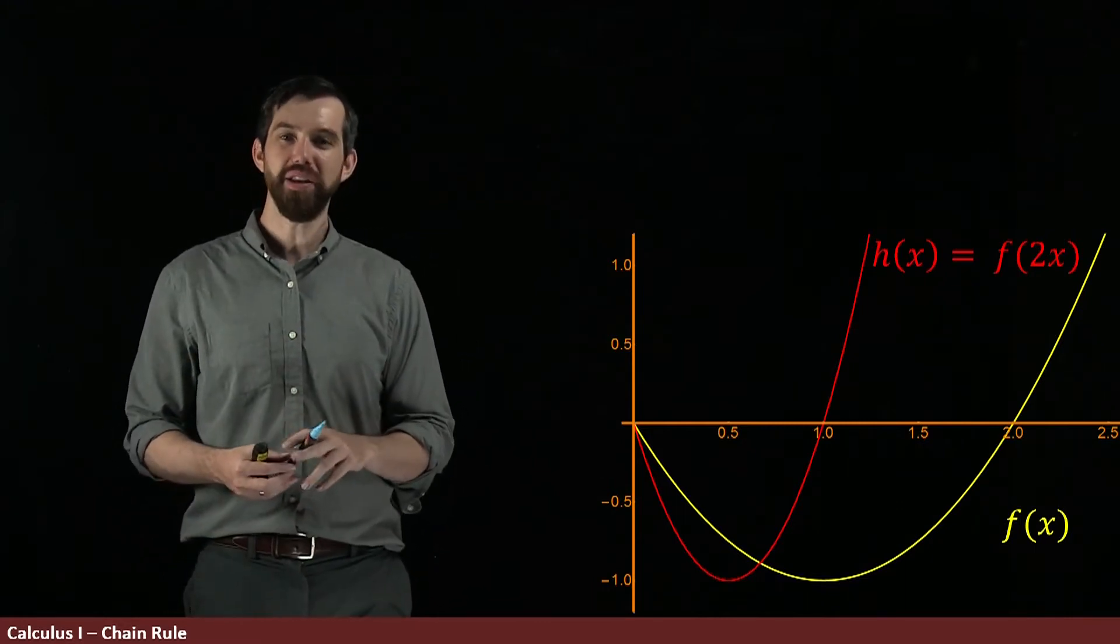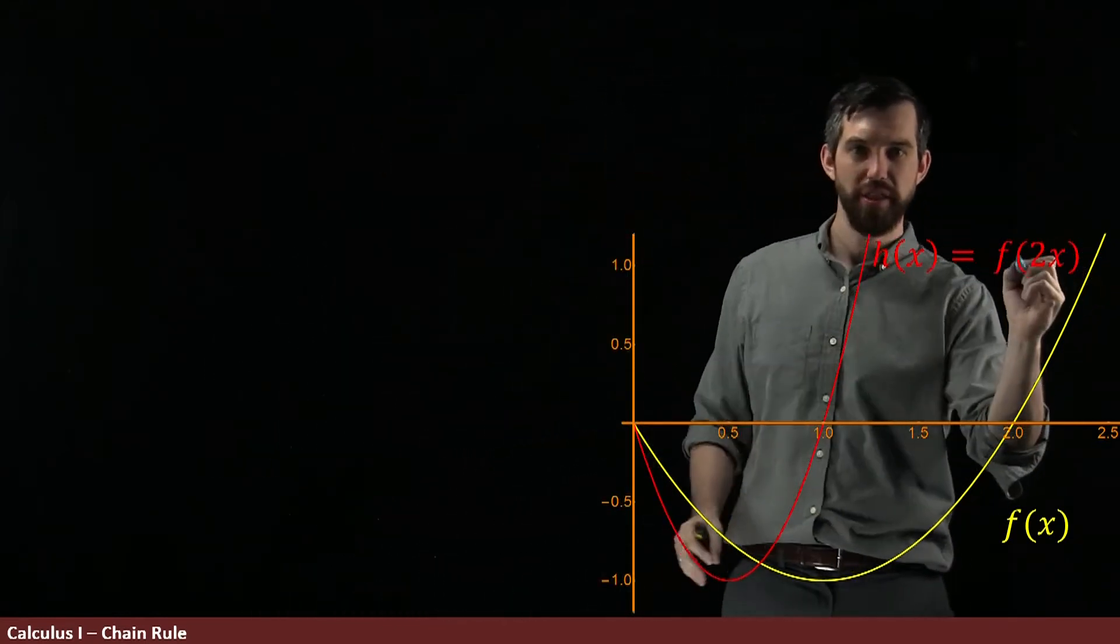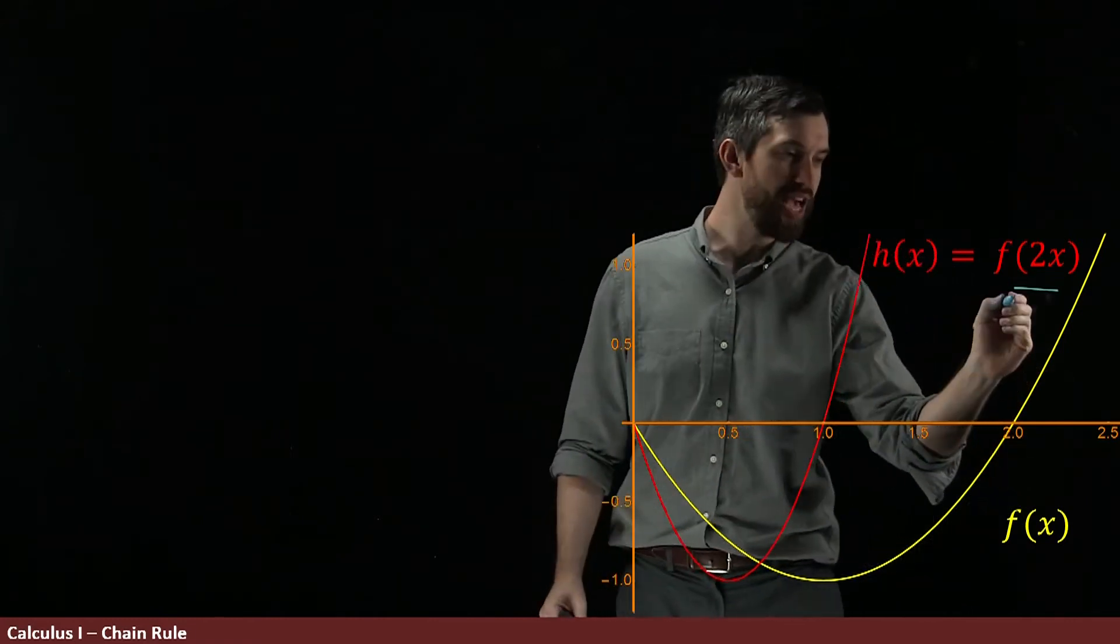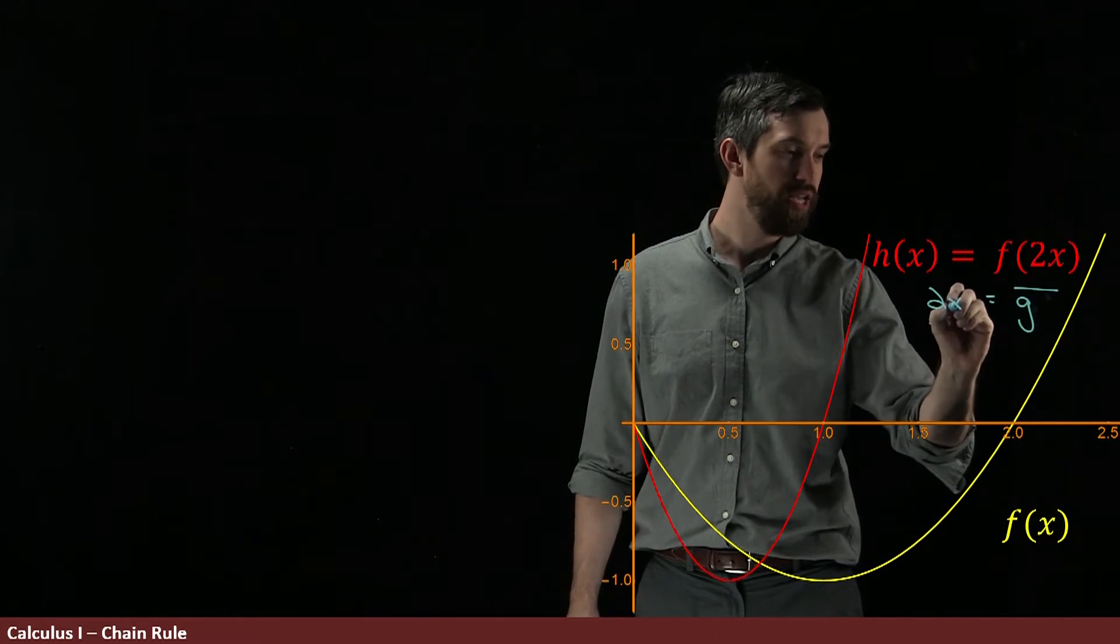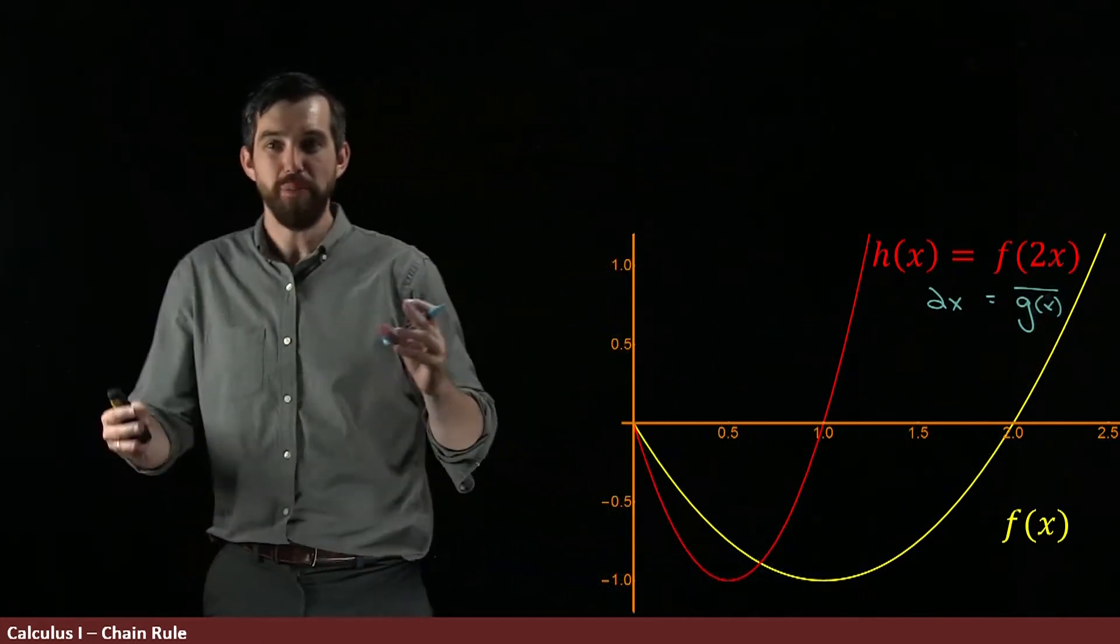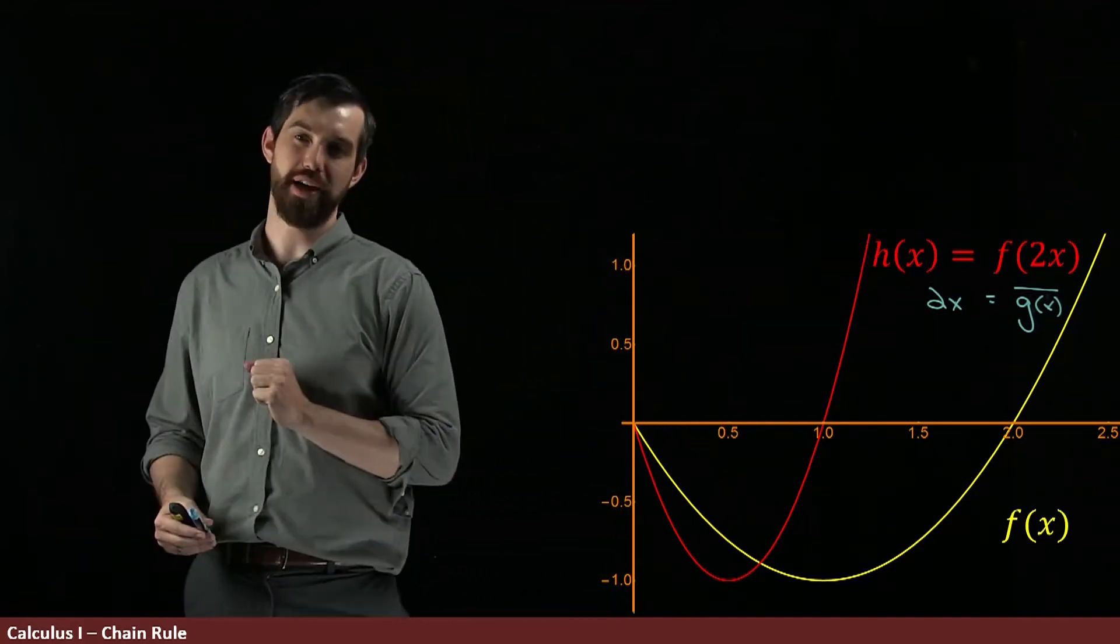And indeed I might note here that this f of 2x, really what you have going on is some inside function that I could call g. And my g is just equal to the function 2x. So in other words, what you have is a composition f of g is going to be this particular function h of x.